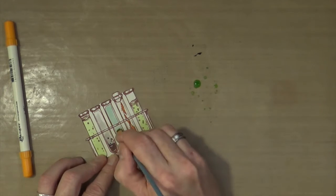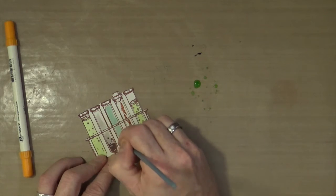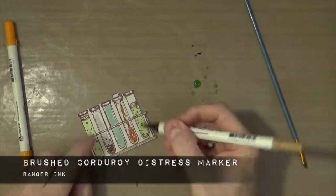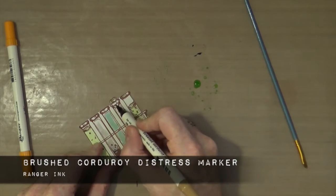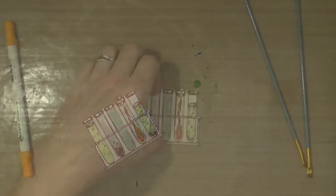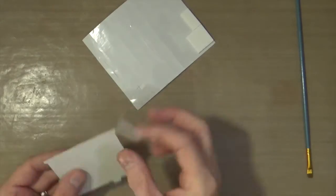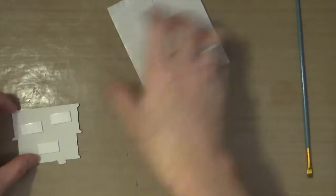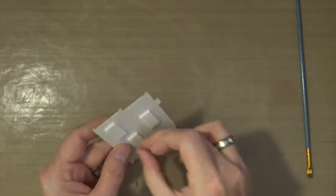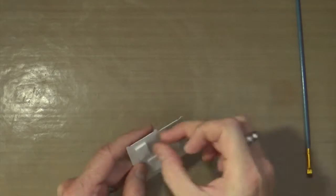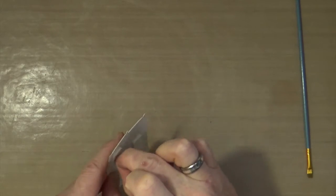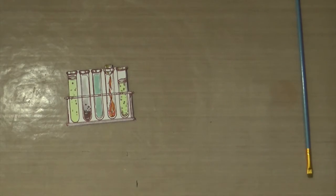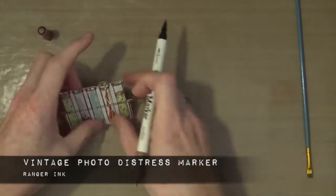To finish it off, I'm using the Brushed Corduroy distress marker to color in the tips on the tops of the test tubes. Once again I want dimension, so I'm using foam pads. Then using the Vintage Photo distress marker, I'm going around the outside of the cutout to blend in those white edges before sticking it onto my canvas.